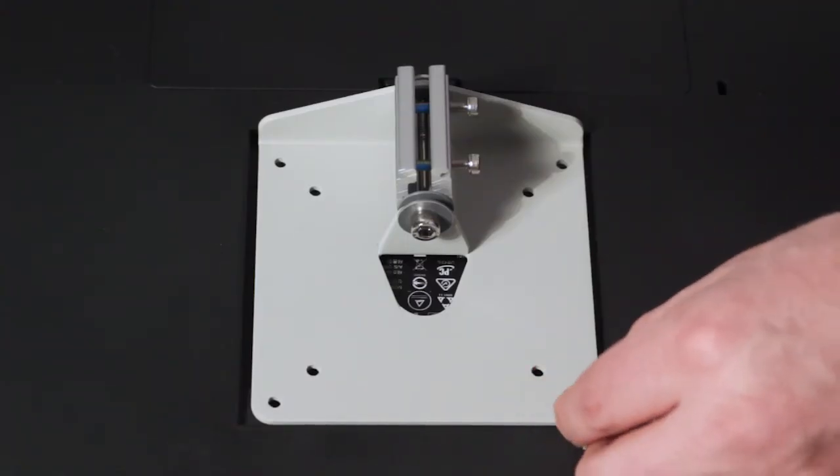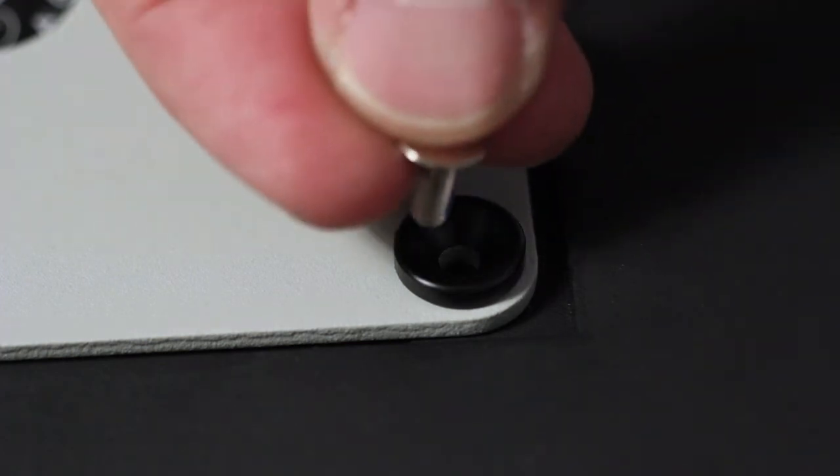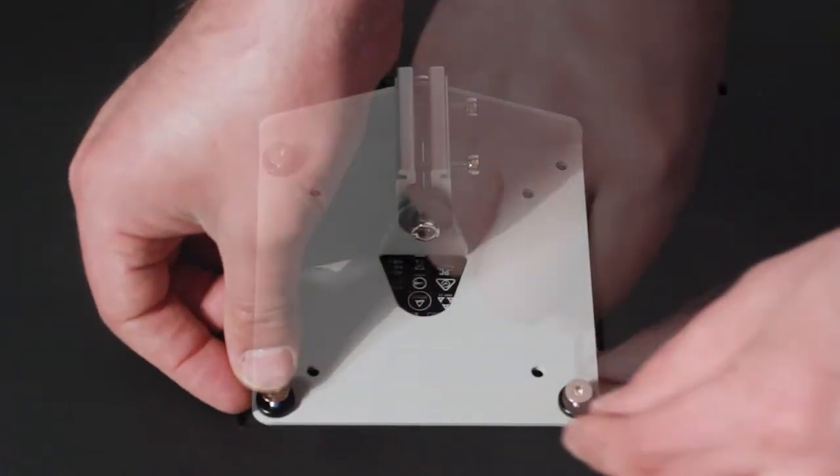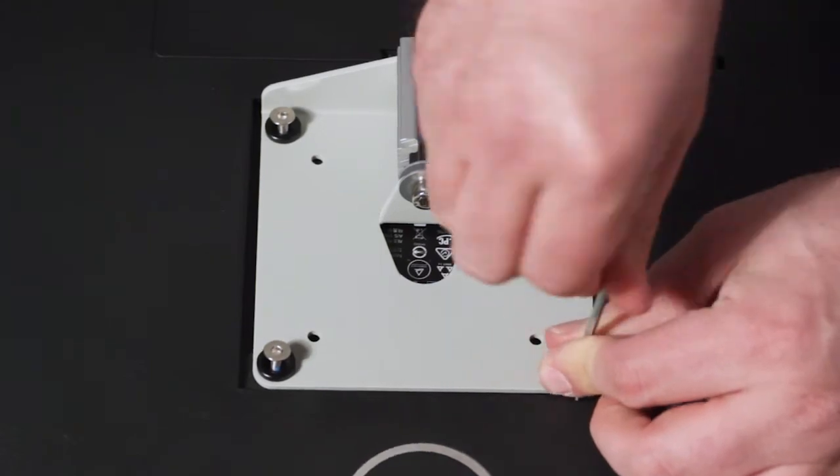Step 11. Attach the VESA mount to the monitor using the M4 x 12 mm screws and the countersunk washers. For monitors with a recessed area for VESA mounting, place spacers between the VESA mount and the monitor and use the M4 x 22 mm screws and countersunk washers.